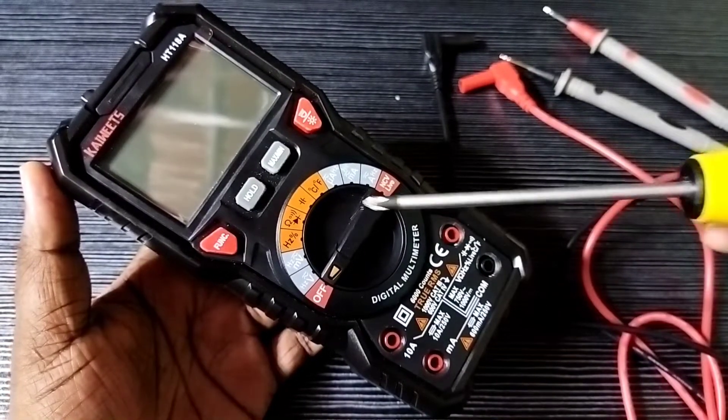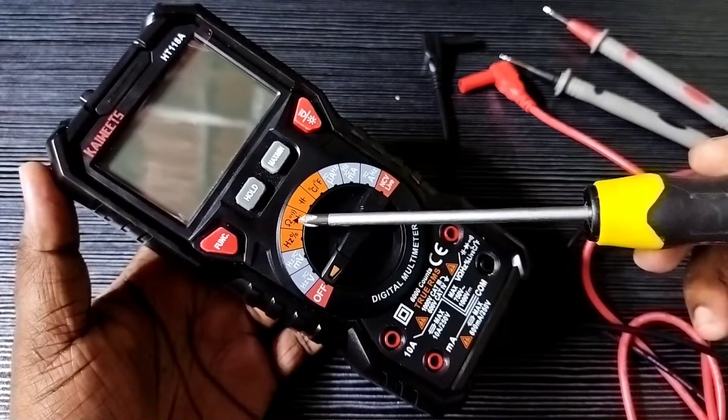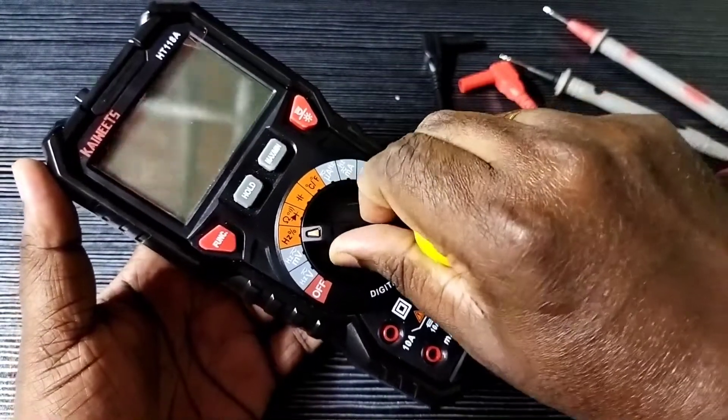Hi friends, this video shows how to measure continuity using a Kivitz digital multimeter. This is a continuity function. We need to select that function using this rotary switch.